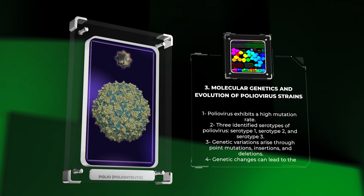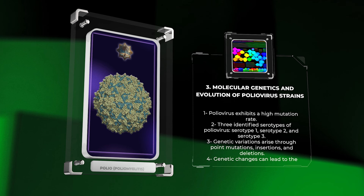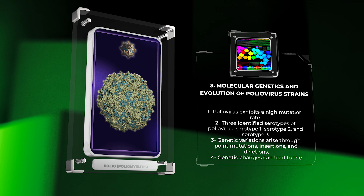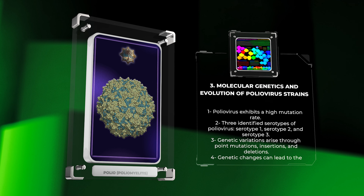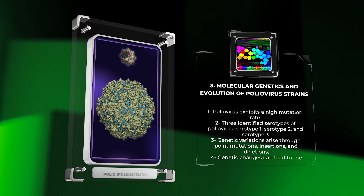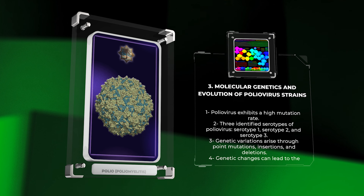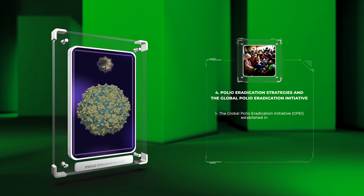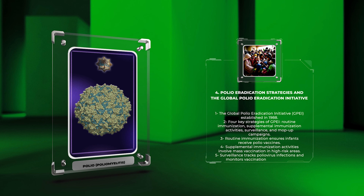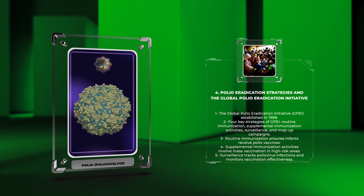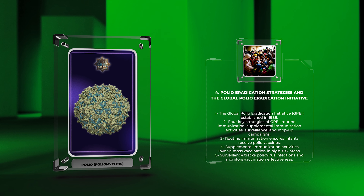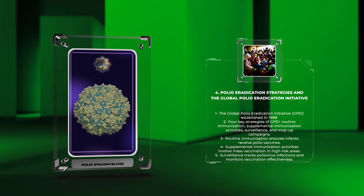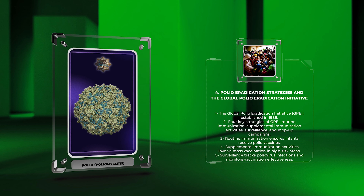We will now examine polio eradication strategies and the Global Polio Eradication Initiative. The Global Polio Eradication Initiative, GPEI, was established in 1988 to eliminate polio worldwide. This initiative focuses on four key strategies: routine immunization, supplemental immunization activities, surveillance, and mop-up campaigns.